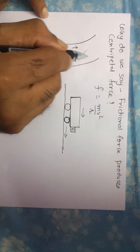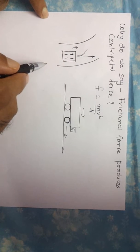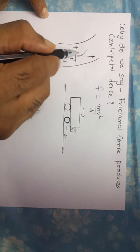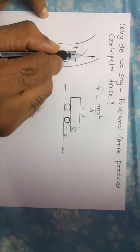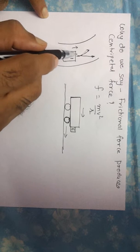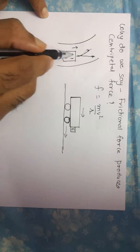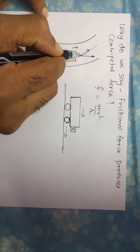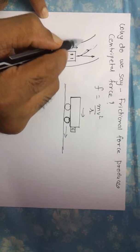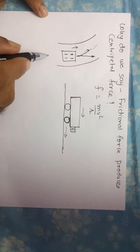It is friction force which causes it to take a turn. Thereby, we say that the friction force is responsible for making the vehicle turn, and therefore it is responsible for producing centripetal force.